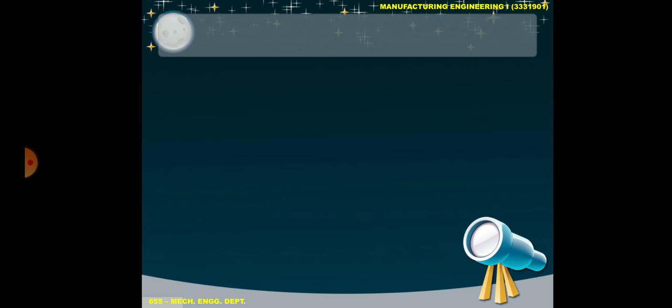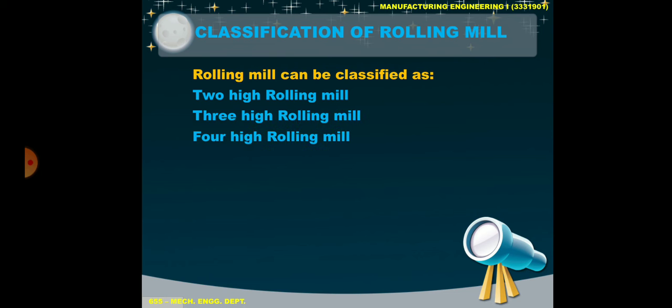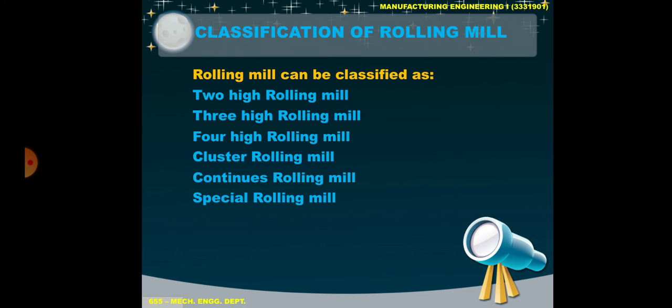Starting with classification of rolling mill. Rolling mill can be classified as 2-high rolling mill, 3-high rolling mill, 4-high rolling mill, cluster rolling mill, continuous rolling mill, and special type rolling mill.